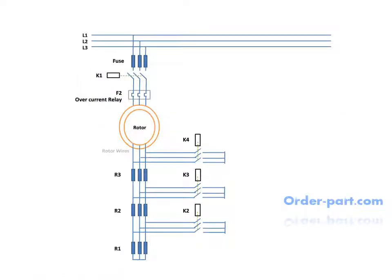Initially all contactors are open. To start the motor, K1 line contactor should be closed. You can see all rotor resistances are in series, meaning high starting torque. After 5 seconds, K2 contactor closes, which removes R1 resistance.